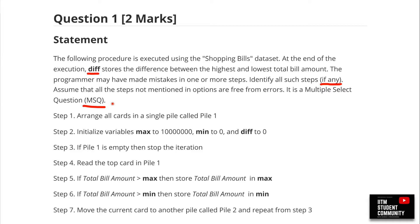Step 1 arranges all cards in a single file called pile one — that's standard. Step 2 initializes variable max to a huge number (10 million), min to zero, and diff to zero. Intuitively, max should store the maximum shopping bill amount, min the minimum, and diff the difference between the highest and lowest total bill amount.